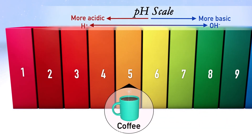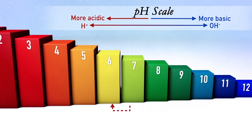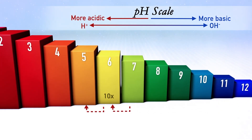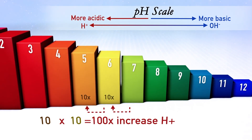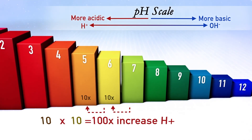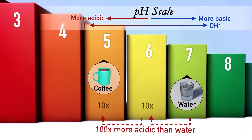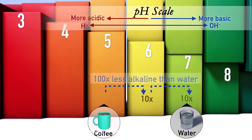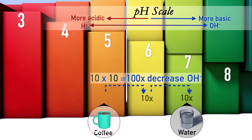For example, coffee has a pH of 5. So from a pH of 7 to a pH of 5, there is 10 times 10, or a 100-fold increase in hydrogen ion concentration compared to neutral water. As you can see, coffee is 100 times more acidic than water. This also means that coffee is 100 times less alkaline than water because it has a 100-fold decrease in hydroxide ion concentration.